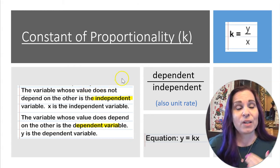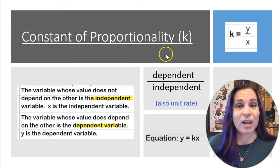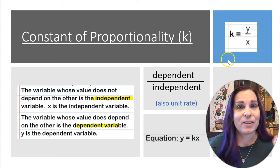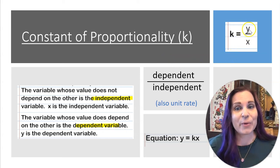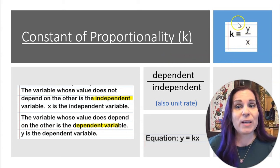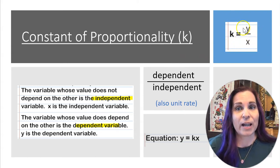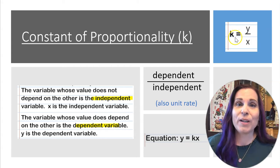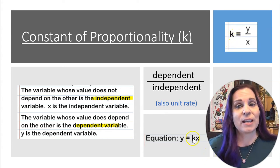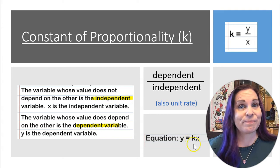So to find the constant of proportionality, we do the dependent divided by the independent. Another way to look at that is y over x. Once we get that y over x and we find that constant of proportionality, all we have to do to write the equation is put it right here.